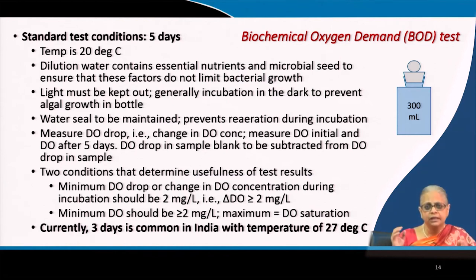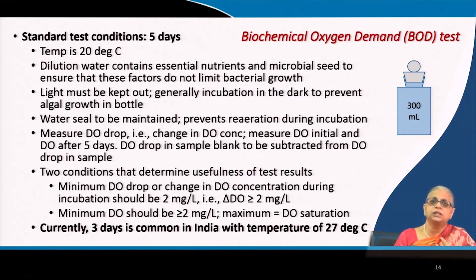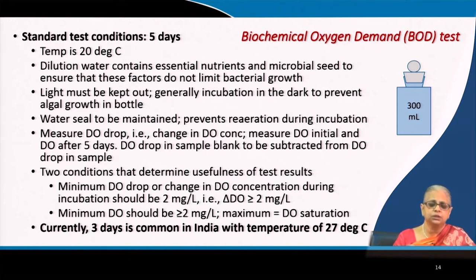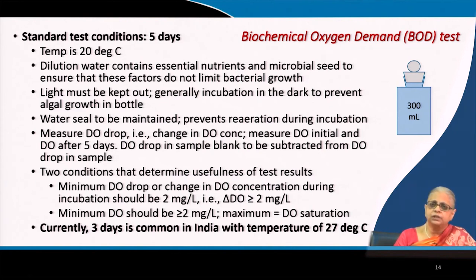The entire test is based on monitoring DO levels during the 5-day test period. The first step is to dilute the wastewater — without dilution, DO would reach 0 at the end of the test period because of the highly biodegradable organic matter. In a 300 ml bottle, about 10–50 ml of wastewater is added to stay within the acceptable range of DO drop.